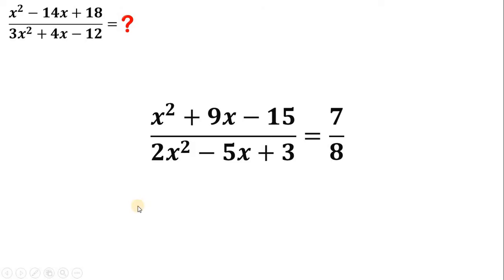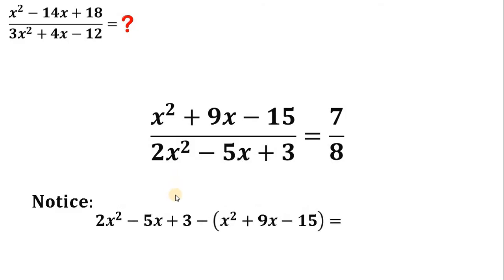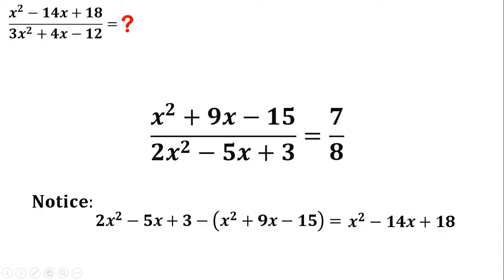How are we going to answer this kind of question? Here is one thing I noticed: if we subtract the numerator from the denominator — that is, 2x squared minus 5x plus 3 minus the quantity x squared plus 9x minus 15 — this gives us x squared minus 14x plus 18, which is exactly the numerator that we want to evaluate.